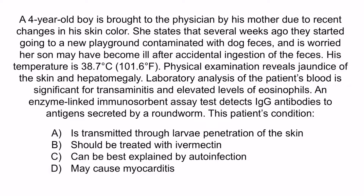A, B, and C are all suggestive of Strongyloides stercoralis, which can occasionally invade the liver, but this is rare. It's much more likely for Toxocara canis to cause hepatitis. Strongyloides is transmitted when larvae penetrate the skin, not via dog feces. It is treated with ivermectin and causes auto-infection. So A, B, and C are all incorrect. The correct answer is D, may cause myocarditis. And with that, we've covered everything you need to know regarding Toxocara canis.